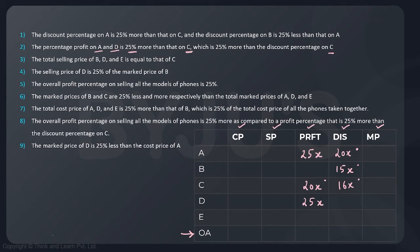The total selling price of B, D and E equals that of C — but I can't use it currently because I don't have those numbers and don't want to take four more variables. So let us keep this statement and use it later. Statement four says the selling price of D is 25% of the marked price of B — that also is not useful for us currently. We have used statements one and two but not three or four.